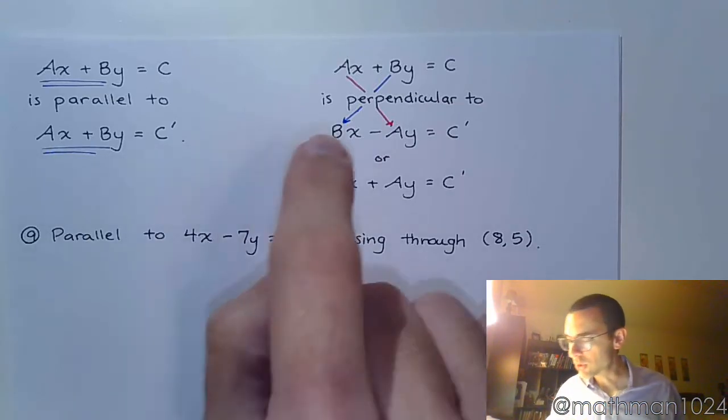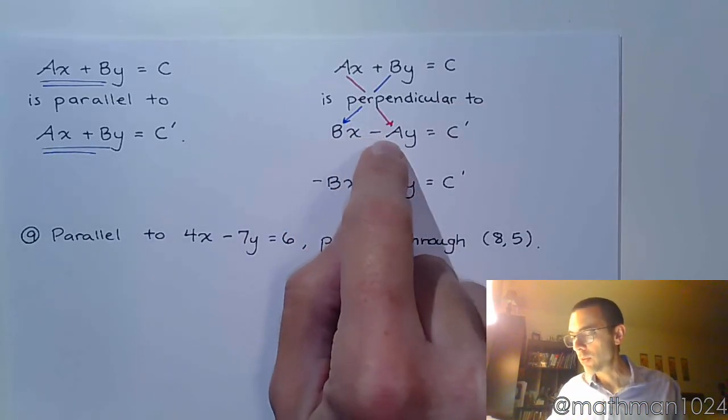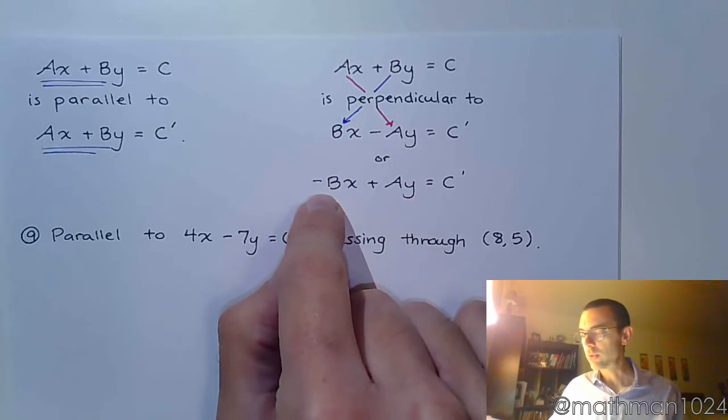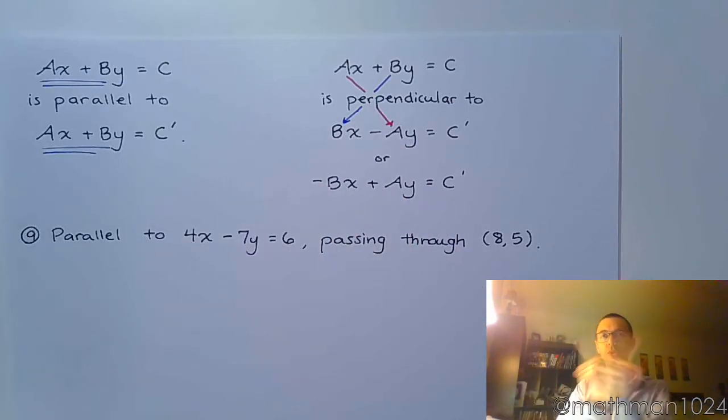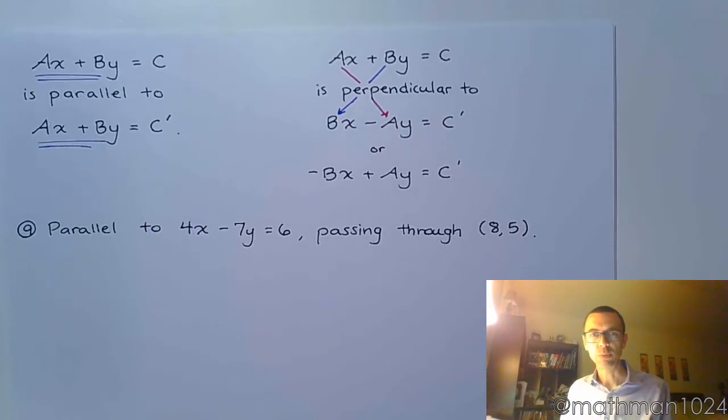Not only do you crisscross them, but you change either the coefficient for y or the coefficient for x. So crisscrossing them is going to give you the reciprocal. Changing one of the signs is going to make it the negative reciprocal. So you don't change the sign of both, you just change the sign of one of them. So let's see how that works out in this problem.